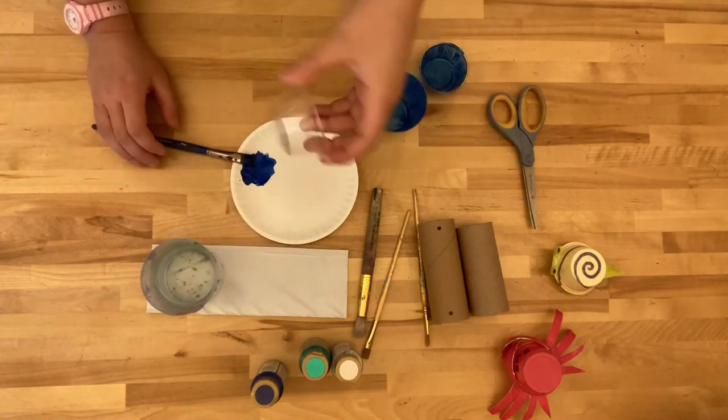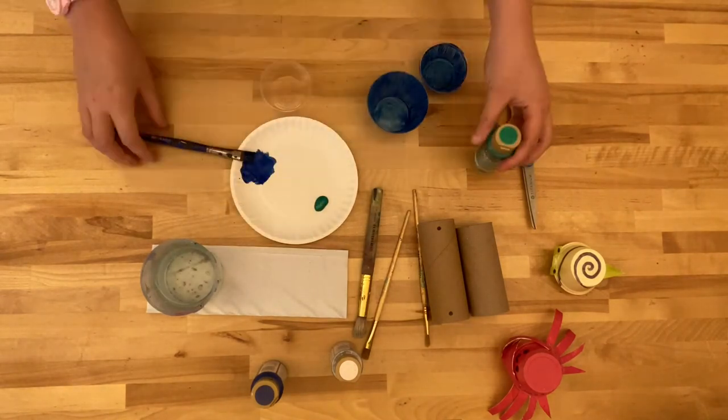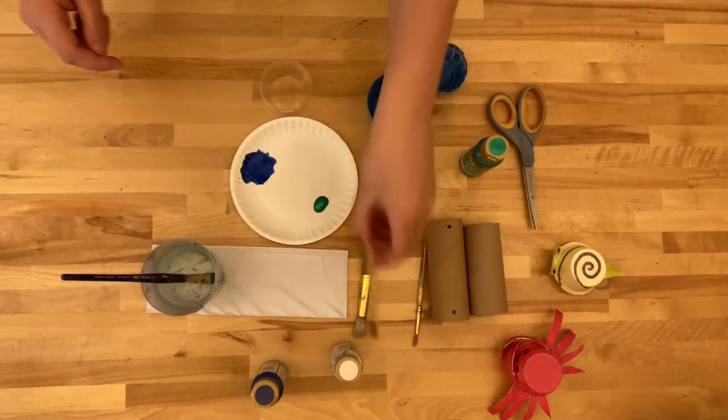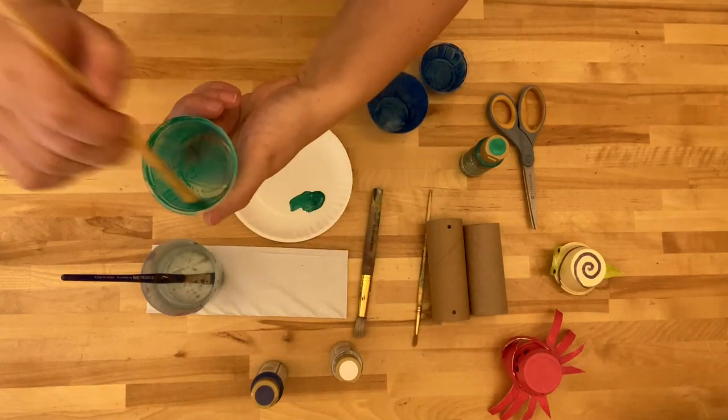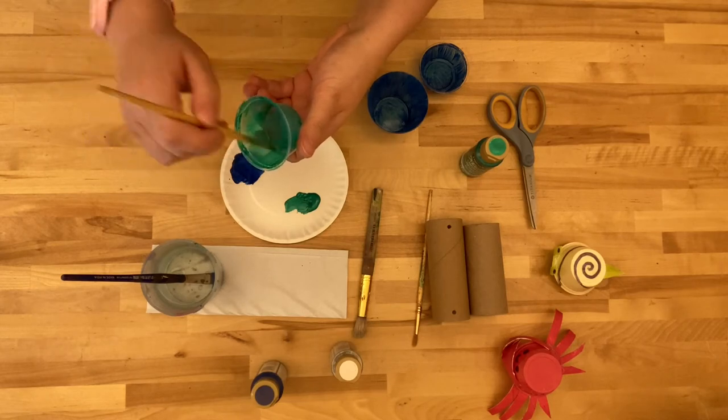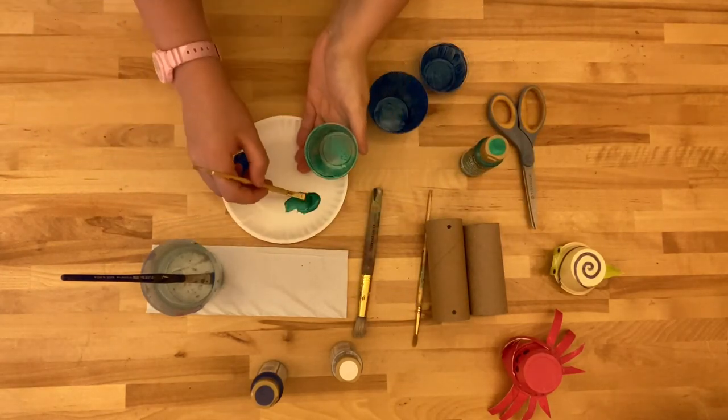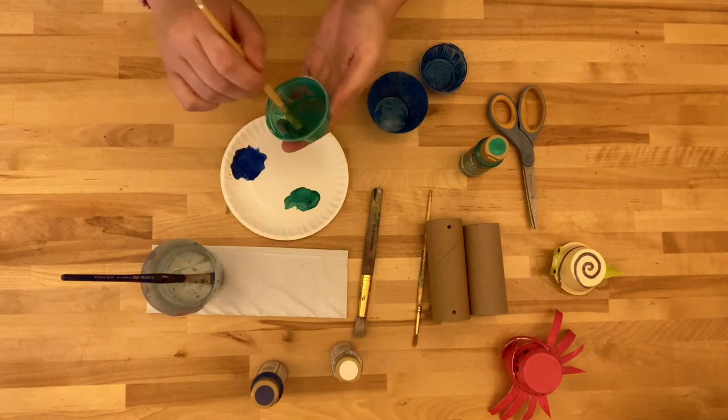And this last one I want to make green. So I'm gonna put a little bit of green, put this brush in the water, and use a different brush for the green. And you'll notice this paint has a little less pigment in it than the blue one so it's harder to see but I can build that up with a couple coats. So I'll let this one sit while I move on and work on the others.